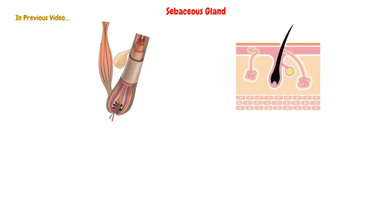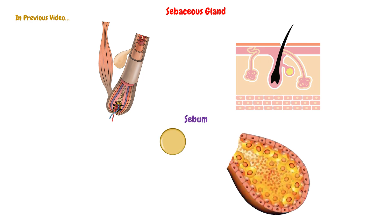In the previous video, we talked about the sebaceous glands and explained almost all details about them. We also talked about the sebum, which is the material produced by the sebocytes in the sebaceous gland.